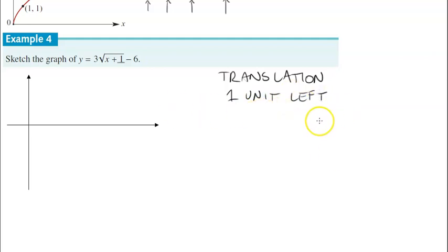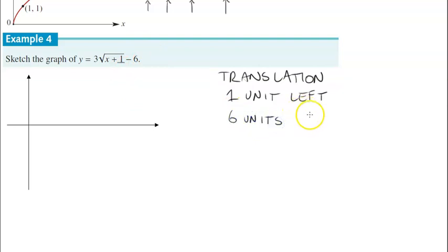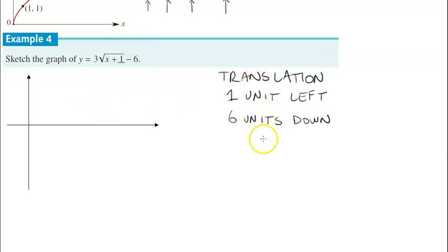You'll go ahead and write down '1 unit left' under your example. For the vertical translation — just to confuse you — if it's a minus, it goes down; if it's a plus, it goes up. In this case this is 6 units down because it is a negative. Remember: when it's associated with the x, the opposite of what it's indicating occurs. So this is 1 unit left. But when it's not associated with the x, it's as normal — so 6 units down. That means our endpoint occurs at the coordinate of negative 1 and negative 6.